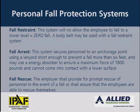Often the term fall arrest system is used when it is more appropriate to speak about personal fall protection, incorporating both a restraint or an arrest system. A fall restraint system allows the employee to fall zero distance — there is no fall. A body belt may be used with a fall restraint system because there is no fall. A fall arrest system secures personnel to an anchorage point using a lanyard short enough to prevent falling more than six feet, and may use an energy absorber to ensure that the maximum force of 1,800 pounds is not exceeded and contact with a lower surface cannot occur. When fall arrest is used, fall rescue is required, and the employer shall provide for prompt rescue of personnel or ensure employees can rescue themselves.